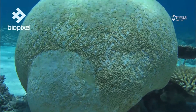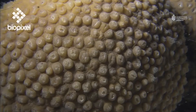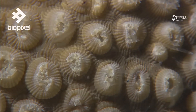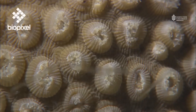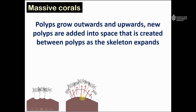Another growth form of corals are these mound-shaped or massive colonies. In these corals, the polyps grow outwards and upwards, and new polyps are added into the space that's created between polyps as the skeleton expands. Again we start with just a few polyps joined together and attached to the substratum. Over time, the polyps grow outwards and upwards, and new polyps are created in the space that arises as the colony expands. A solid, dense skeleton is left behind underneath between the living tissue layer and the underlying reef substratum.